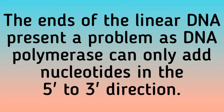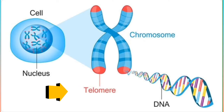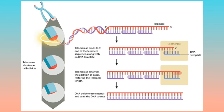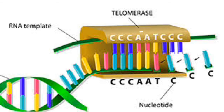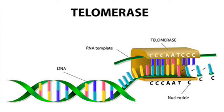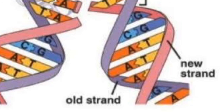The ends of the linear DNA present a problem, as DNA polymerase can only add nucleotides in the 5' to 3' direction. The ends of the parent strands consist of repeated DNA sequences called telomeres. Telomeres act as protective gaps at the end of chromosomes to prevent nearby chromosomes from fusing. A special type of DNA polymerase enzyme, called telomerase, catalyzes the synthesis of telomere sequences at the end of the DNA. Once completed, the parent strand and its complementary DNA strand coil into the familiar double helix shape. In the end, replication produces two DNA molecules, each with one strand from the parent molecule and one new strand.